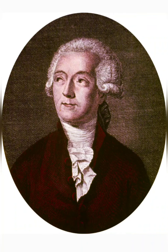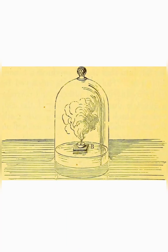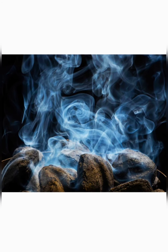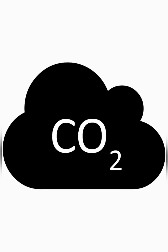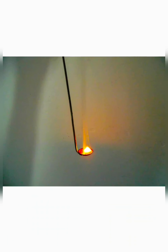Lavoisier kept charcoal in a bell jar and placed it in a water vessel and burnt it. When he burnt it, it produced a fixed gas which is carbon dioxide. At that time people used to call carbon dioxide as fixed gas or chalky acid gas. Later he burnt sulphur and observed that something was helping in burning the sulphur, but it was not moisture or water vapor. So it is either air or some elastic fluid present in the air.